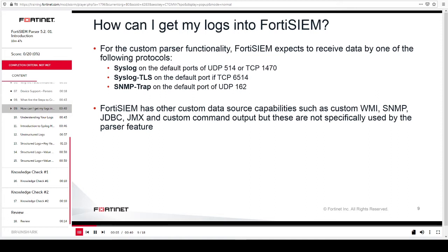For the custom parser functionality, FortiSIEM expects to receive data by one of the following protocols: syslog on the default ports of UDP-514 or TCP-1470; syslog TLS on the default port of TCP-6514; or SNMP trap on the default port of UDP-162. FortiSIEM has other custom data source capabilities such as custom WMI, SNMP, JDBC, JMX, and custom command output, but these are not specifically used by the parser feature.